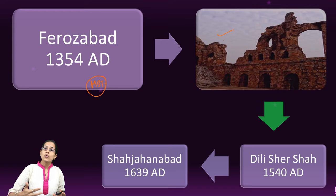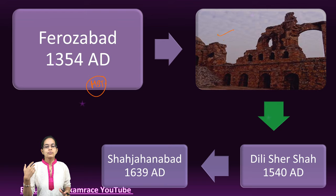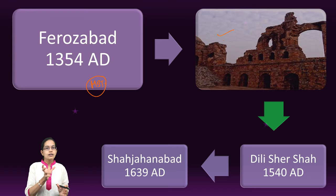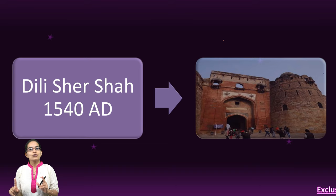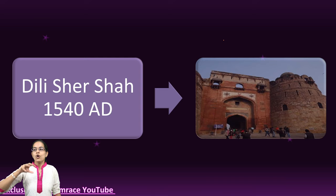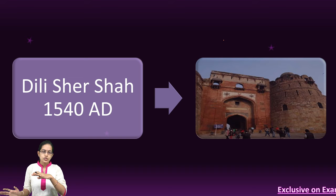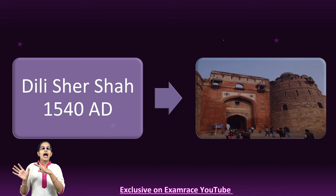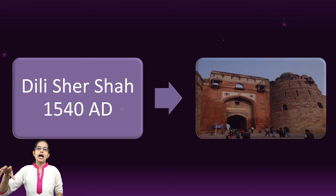After Firozabad, two more cities complete the seven: Dilli Sher Shah and Shah Jahanabad. Dilli Sher Shah, also known as Shergarh, was established by Sher Shah at the present Puranakila site — also one of the ancient Indraprastha sites. This region was originally built by Humayun and known as Dinpanah, but was later captured by Sher Shah. The ruins of both Humayun and Sher Shah's constructions are major tourism sites in Delhi today.